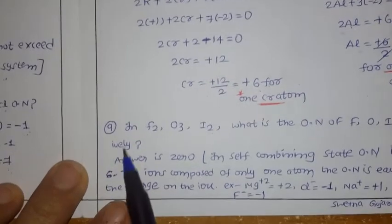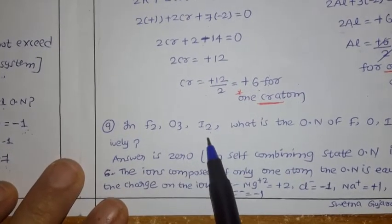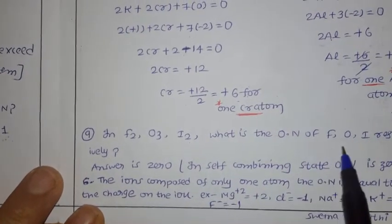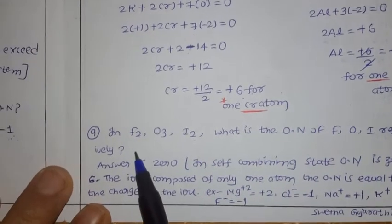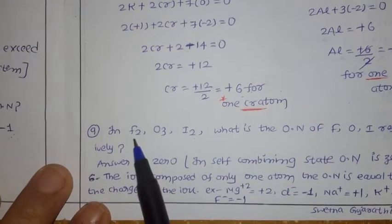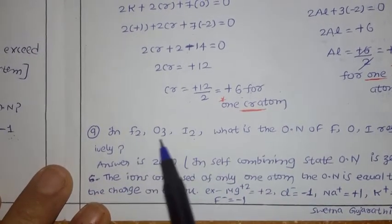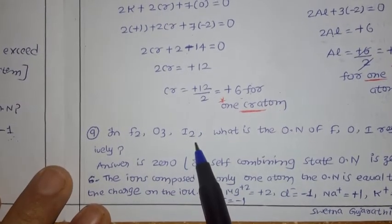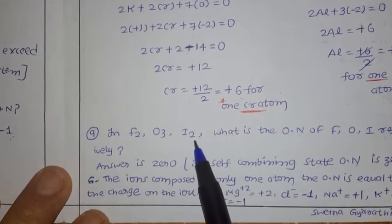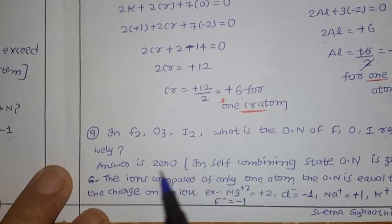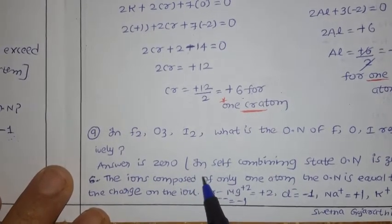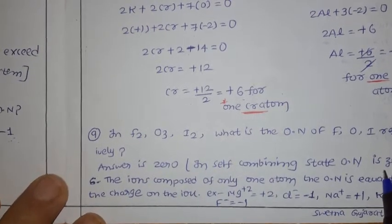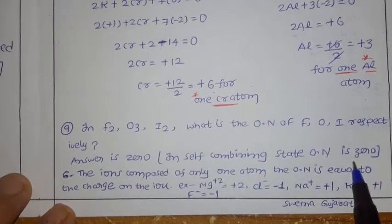Here is a question: in F2, O3, I2 — what is the oxidation number of fluorine, oxygen, and iodine respectively? For all these cases, the oxidation number is 0. Because in self-combining state, oxidation number is 0, as already discussed in the first rule.